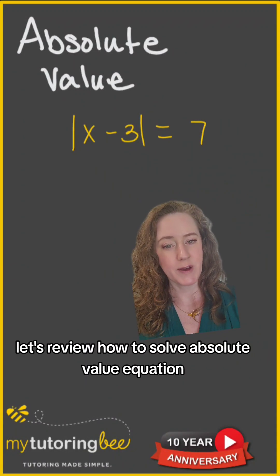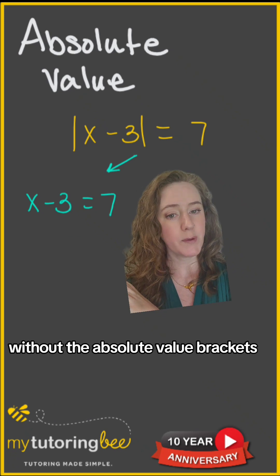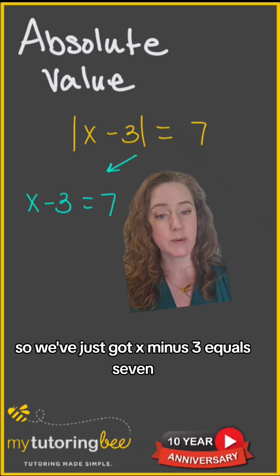Let's review how to solve absolute value equations. Our first step is going to be to rewrite this equation without the absolute value brackets. So we've just got x minus 3 equals 7.